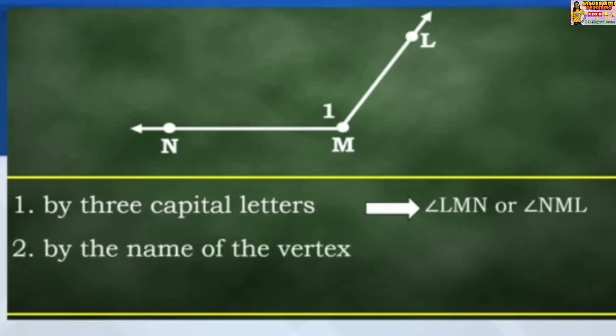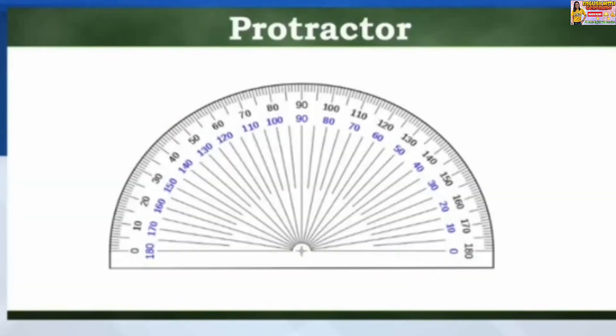How about by the name of the vertex? Example: angle M. By a number? Example: angle 1. And how will we measure an angle? Yes, we can measure an angle by using a protractor.